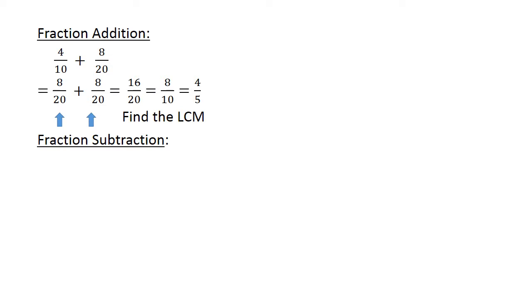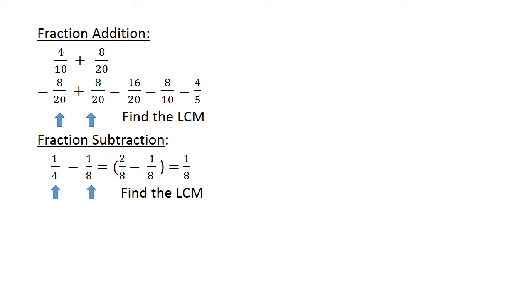Fraction Subtraction: 1 over 4 minus 1 over 8. We find the first and lowest common multiple. 2 over 8 minus 1 over 8 equals 1 over 8.